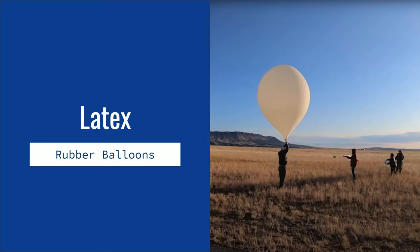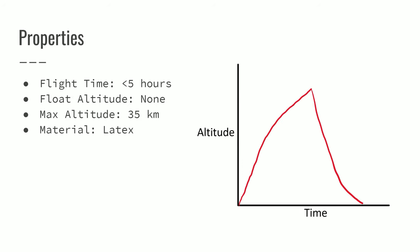The second type of balloon I want to talk about is a latex balloon. These are basically big party balloons. Their flight time is about five hours. They don't reach a float so much as they go up until they explode. Basically they're made out of latex, they're basically just rubber.